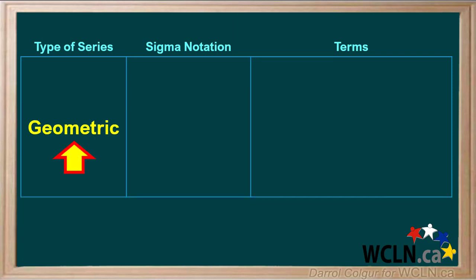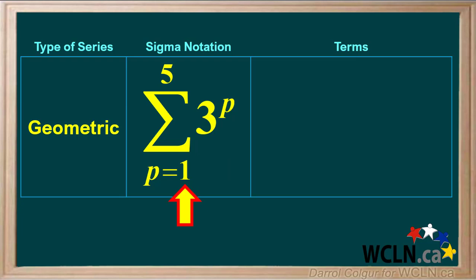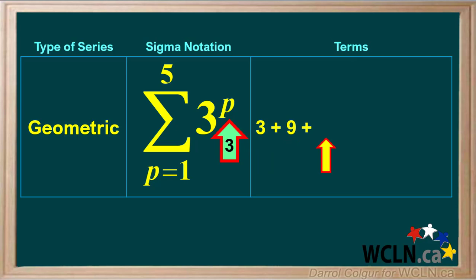The next type of series we'll look at is a finite geometric series. This time the function is 3 to the power p, with p equal to 1 for the first term and 5 for the last term. The first term is 3 to the power 1, or 3. For the second term, p equals 2, giving 3 to the power 2, or 9. For the third term, p equals 3, giving 27. p equals 4 for the fourth term, giving 81.